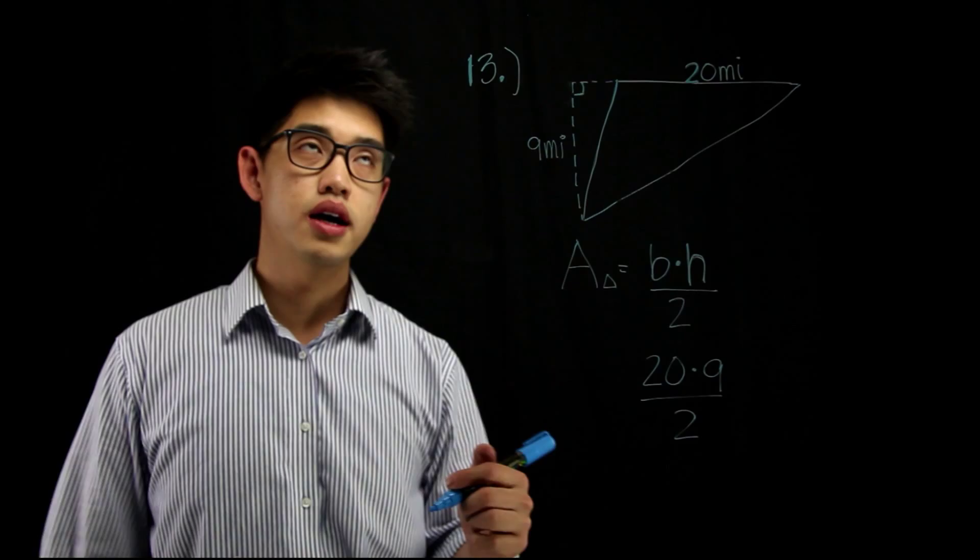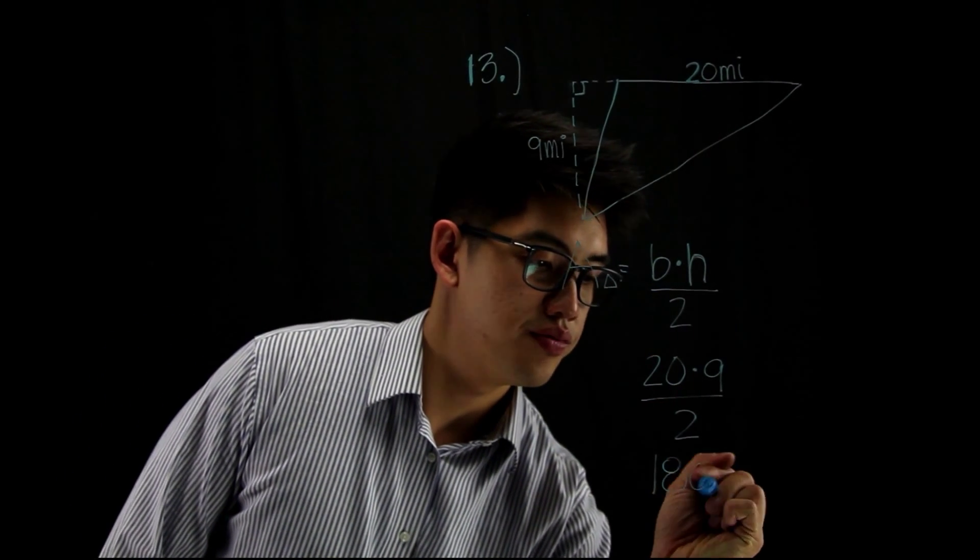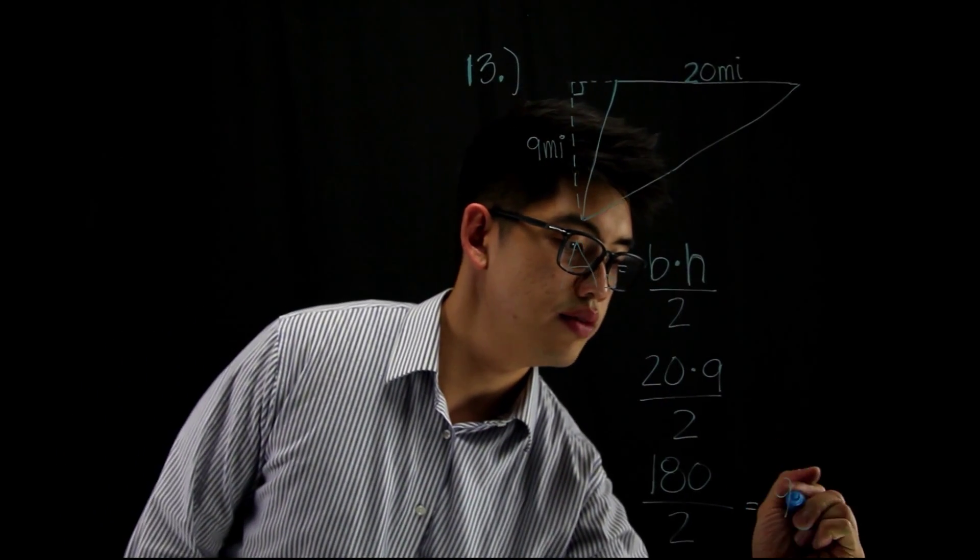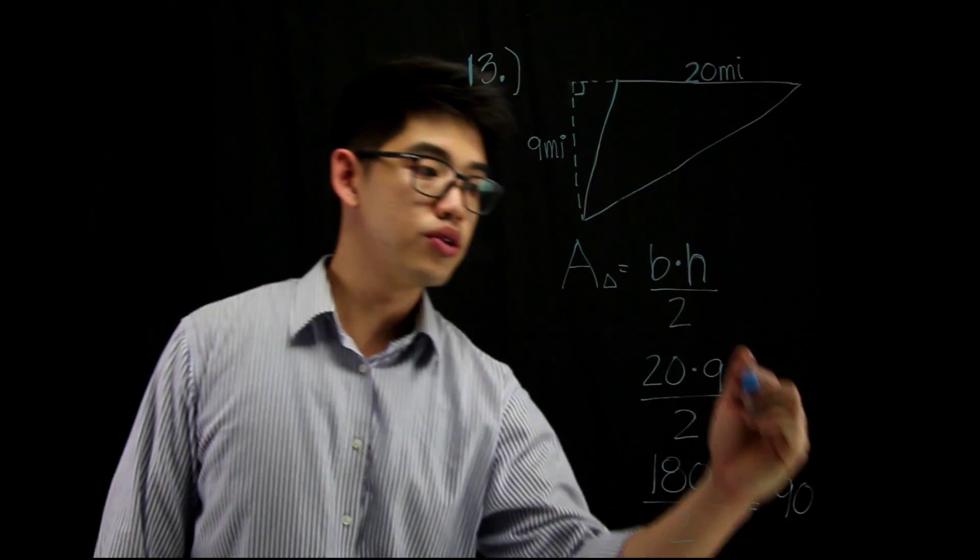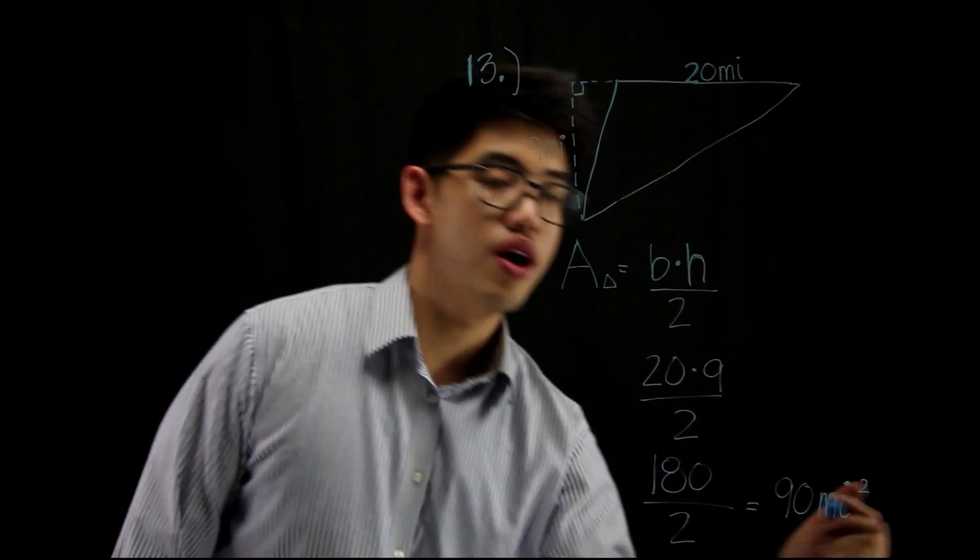20 times 9, that's 18. Oh, but the 0, that's 180. Okay. 180. And we're going to divide that by 2. 180 divided by 2, and that's going to give you 90. And since the units are in miles, it's going to be 90 miles squared. We're done.